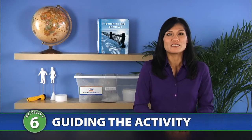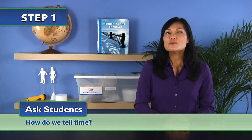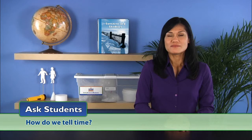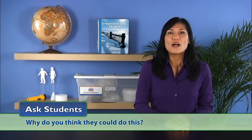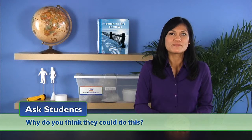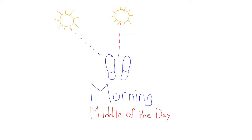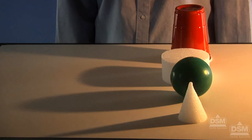To begin Session 1, ask students: How do we tell time? Students will probably suggest a clock. Explain that people did not always have clocks and that they used to rely on the sun to tell time. Ask students: Why do you think they could do this? Some of the students may recall that the sun appears in different places in the sky at different times of the day. Students may also remember that shadows change shape as well.